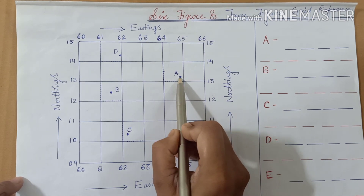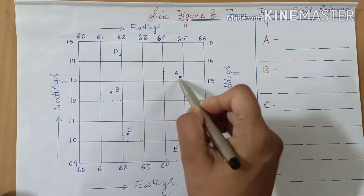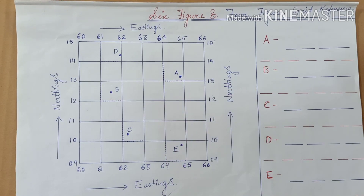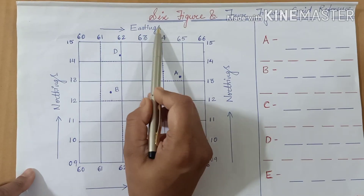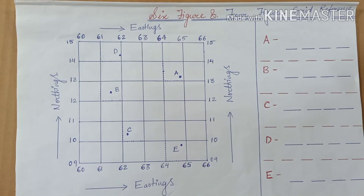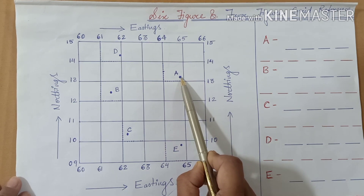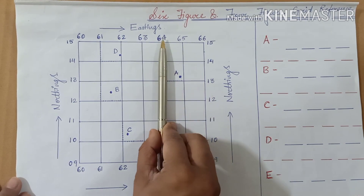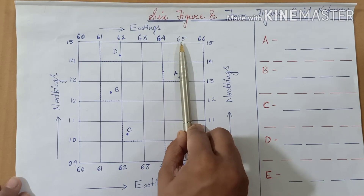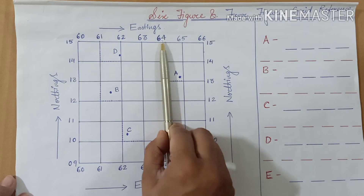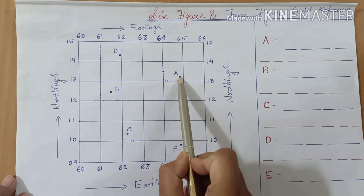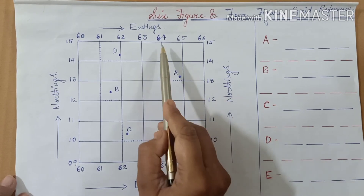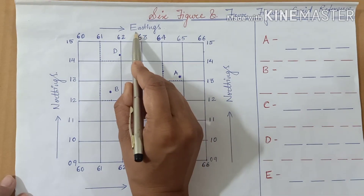This is point A. Suppose we have to calculate the four figure grid reference. As the word says, four figure — there are four figures. The first two figures will be the eastings. Let us see the eastings of point A. We will find that point A is between eastings 64 and 65. We will take up the lesser value, which is 64.